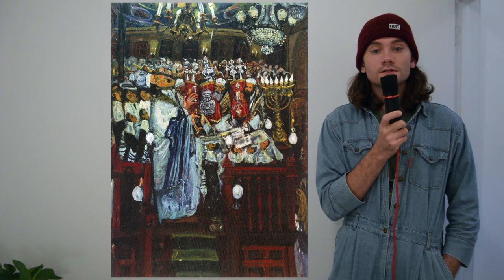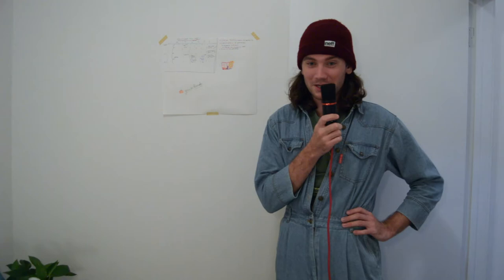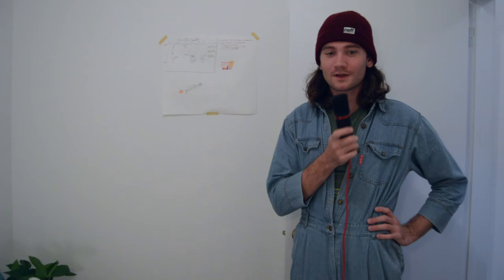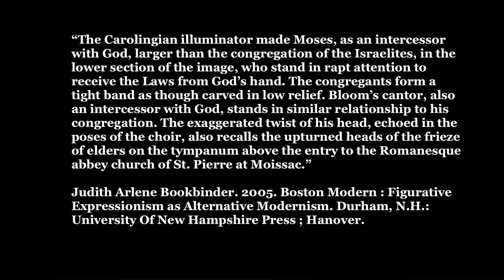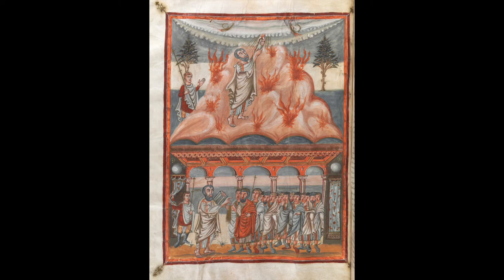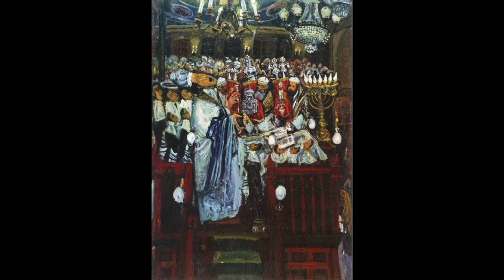Some historians have connected the work to other religious iconography. Art historian Judith Bookbinder suggests a connection to the medieval spiritual imagery in the Moutier-Grandval Bible. The Carolingian illustrator made Moses as an intercessor with God larger than the congregation of the Israelites in the lower section of the image, who stand in rapt attention to receive the laws from God's hand. The congregants form a tight band as though carved in low relief. Bloom's Cantor, also an intercessor with God, stands in similar relationship to his congregation. The exaggerated twist of his head, echoed in the poses of the choir, also recalls the upturned heads of the frieze of elders on the tympanum above the entry to the Romanesque Abbey Church of St. Pierre at Moissac.